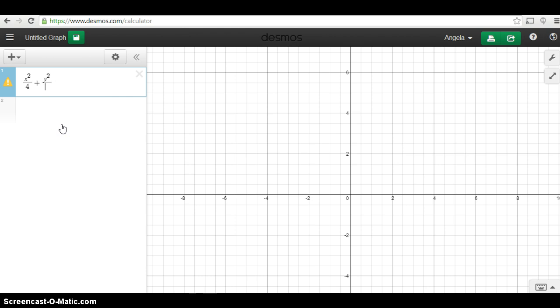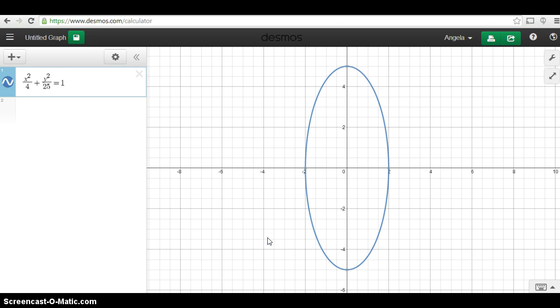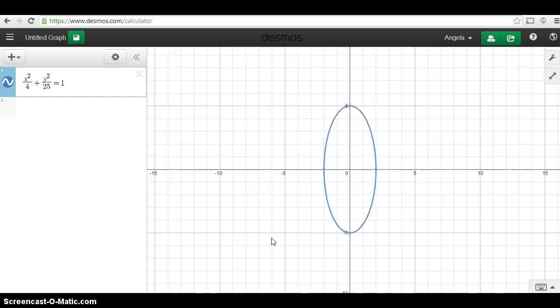So 5 squared, 25 is equal to 1. Alright, so that gives us this semi-ellipse. Now, it's a little too large, so I'm going to zoom out using my scroll wheel. There you go.